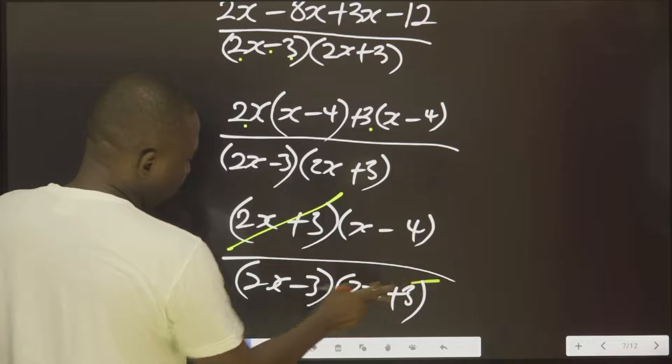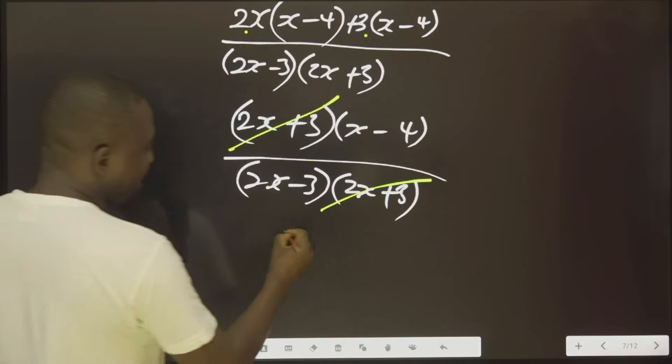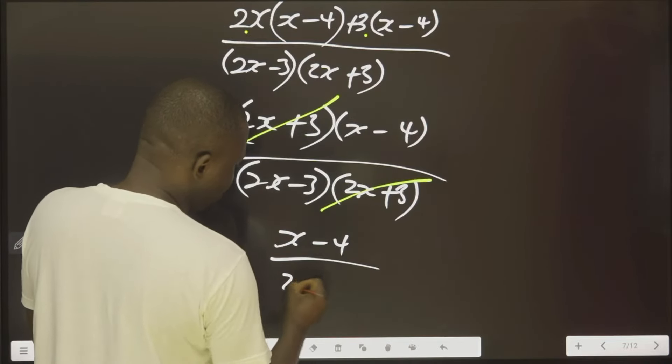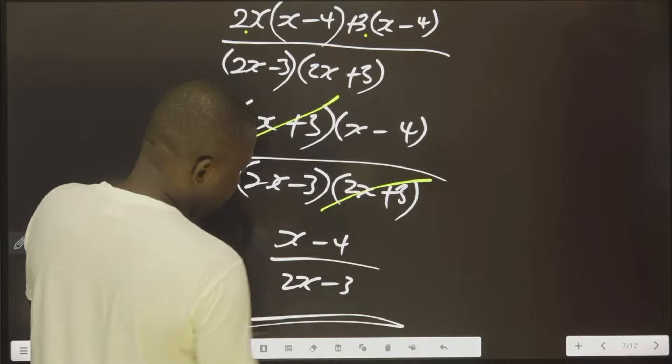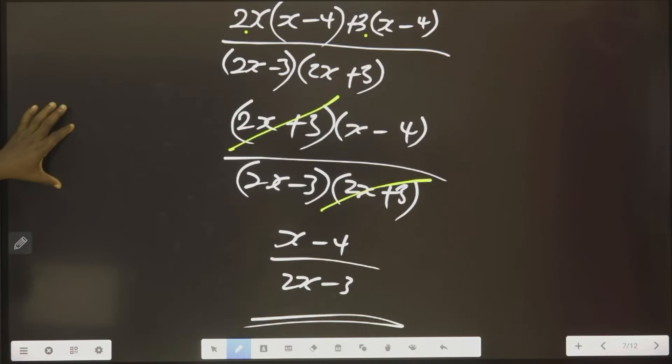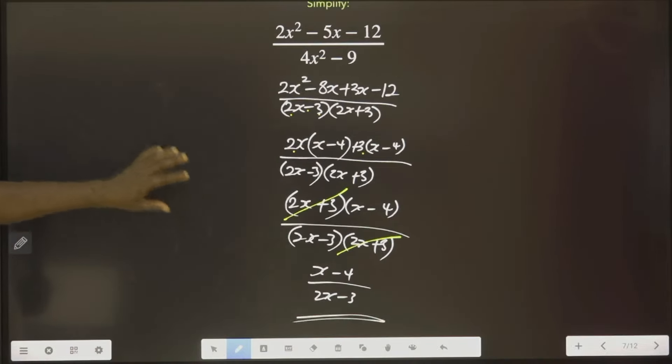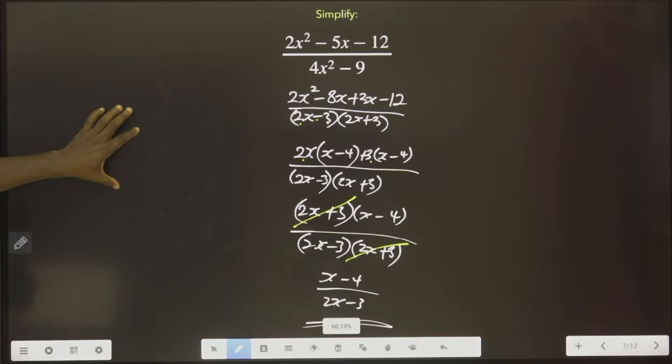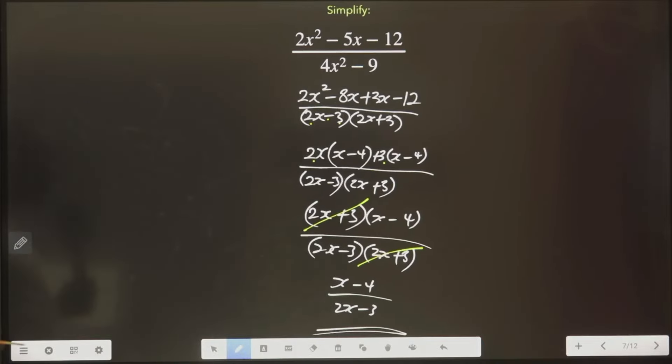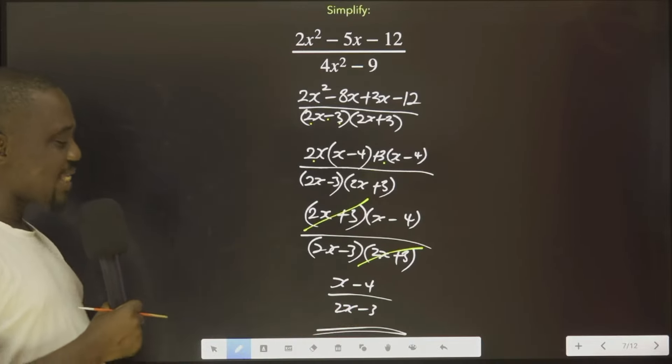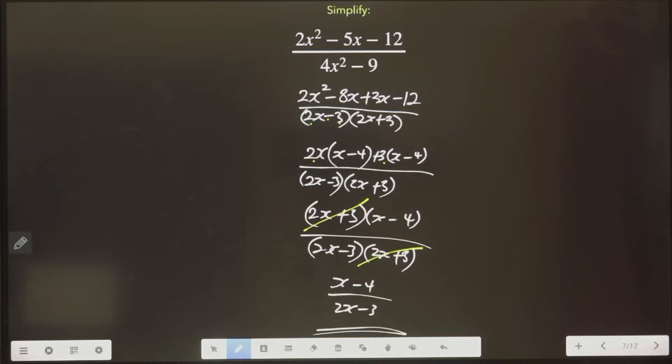This will cancel this. We now have x minus 4 over 2x minus 3. So now, as you can see, we have this answer. x minus 4 over 2x minus 3.